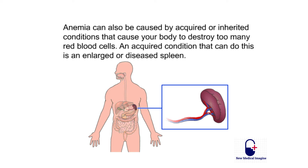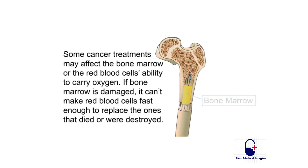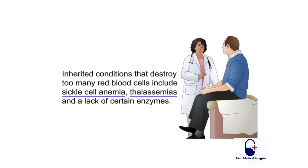Anemia can also be caused by conditions that make your body destroy too many red blood cells. An acquired condition that can do this is an enlarged or diseased spleen — an organ that removes worn-out blood cells. If the spleen is enlarged or diseased, it may remove too many blood cells. Some cancer treatments may affect the bone marrow or red blood cells' ability to carry oxygen. People with HIV/AIDS may also develop anemia due to infections or medicines used to treat their disease.